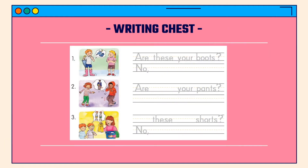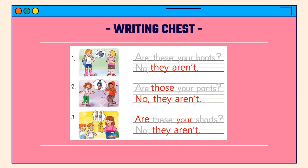Writing: trace the answers. Number one — Are these your boots? No, they aren't. Number two — Are those your pants? No, they aren't. Number three — Are these your shorts? No, they aren't.